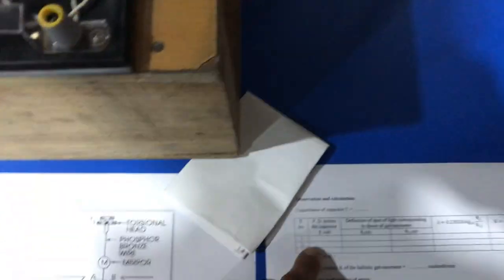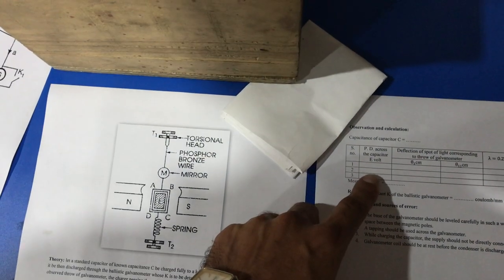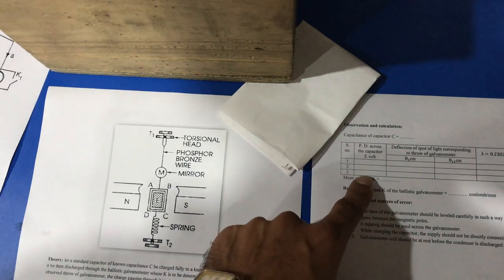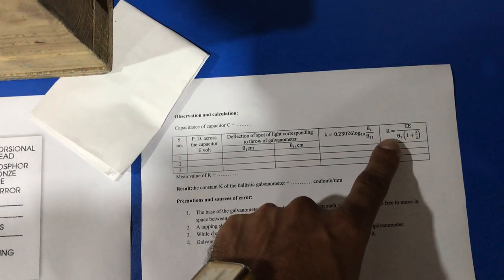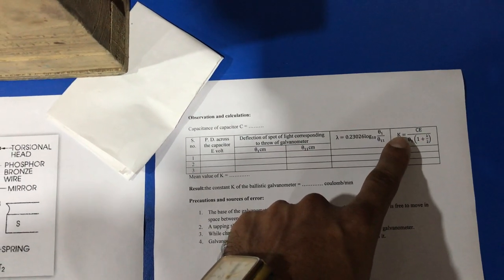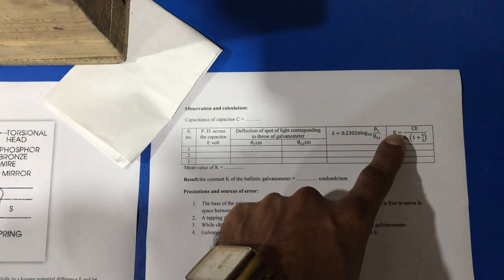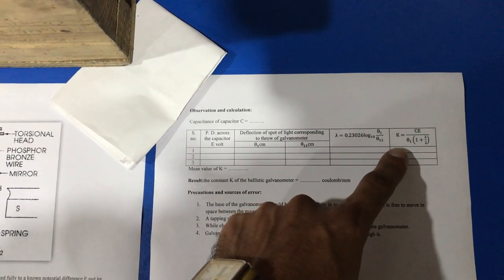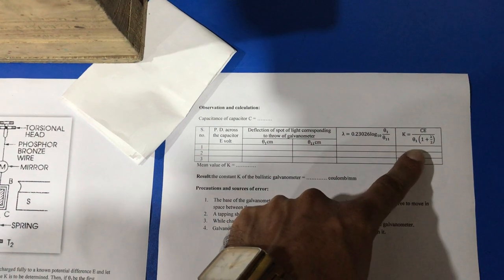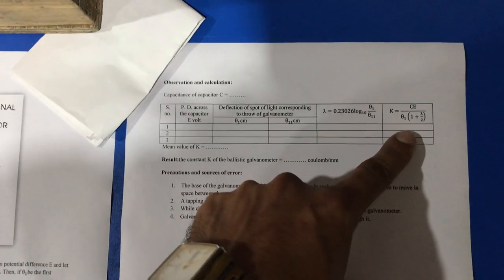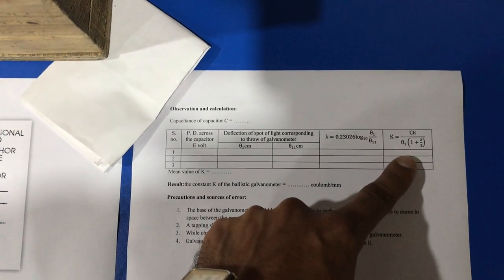Now we repeat this process for other values of voltage, 4 and 6, and calculate the value of ballistic constant K by using the formula: K = C × E × θ₁ × (1 + λ/2).